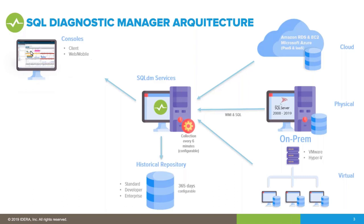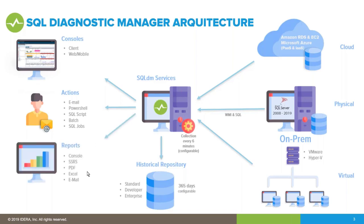We have a thick client — a fat client you install on your laptop or PC — that connects to the repository for real-time and historical data. We also have actions: when something crosses a threshold, you can trigger alerts or corrective actions. There are over 35 built-in reports available in the console, deployable to SSRS, and exportable to PDF or Excel — and schedulable as email.